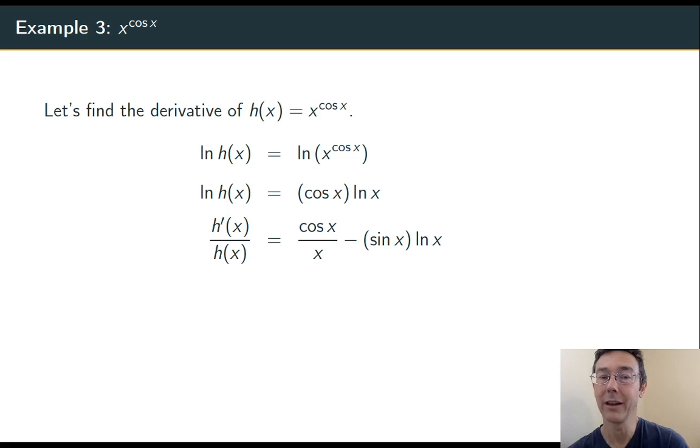so h prime over h equals cosine x over x minus sine x ln of x. It's a product rule again.